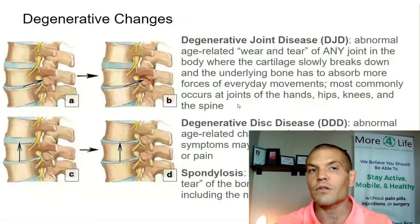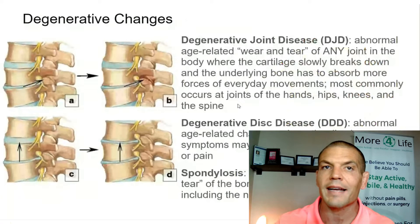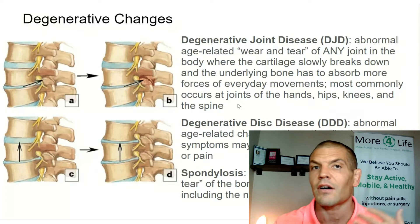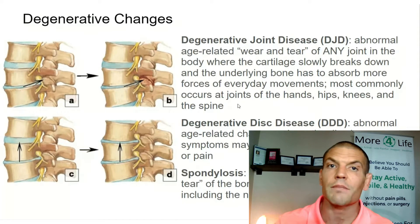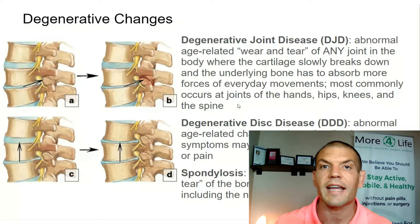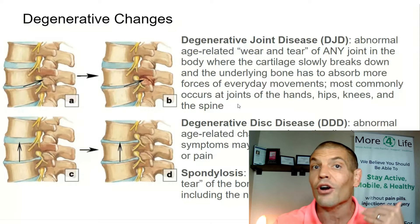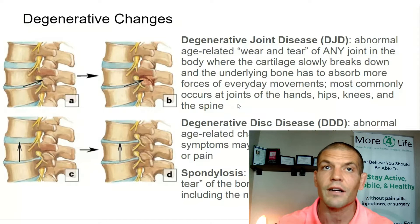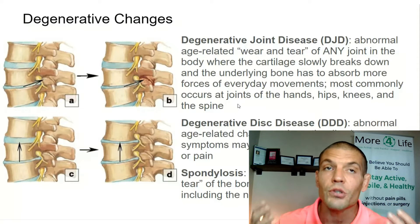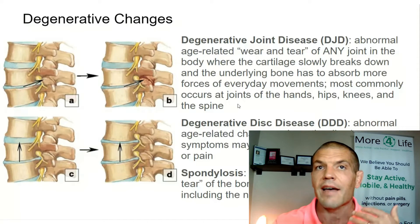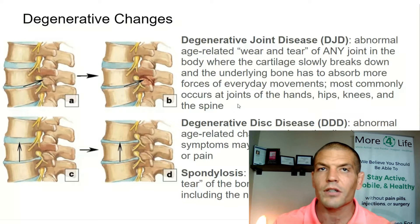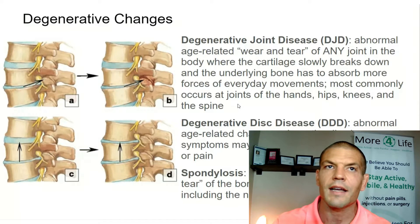Next, we'll move on to degenerative changes in the spine. These are the most common findings that you'll see on MRI reports, especially in people who are over the age of 40, but they start much earlier in life. Degenerative joint disease is where you have a wearing down of the facet joints, which are the little spots you see on the arrow in the top picture.